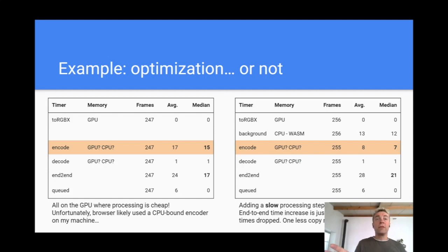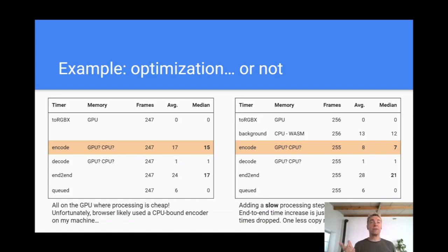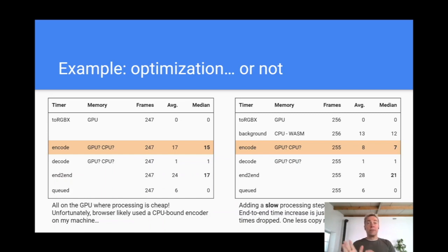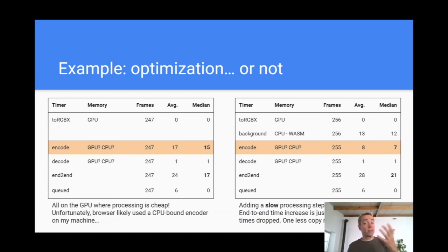Here is an example. Without going into details, the table on the left represents a simple processing workflow optimized to leverage processing on the GPU — and processing on the GPU is really fast. The overall workflow typically takes 17 milliseconds per frame, and that's great. Now the table on the right is the same workflow, except I added a slow WebAssembly processing step in the middle.